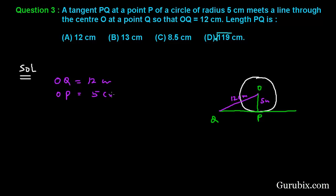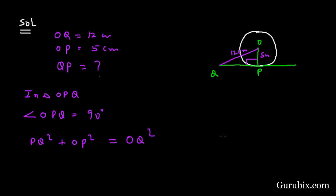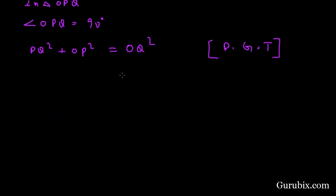We have to find the length of PQ. So we are given OQ equals 12 centimeters and OP equals 5 centimeters. We shall move to triangle OPQ. The angle at P is 90 degrees, therefore by Pythagoras theorem: OQ squared equals PQ squared plus OP squared.